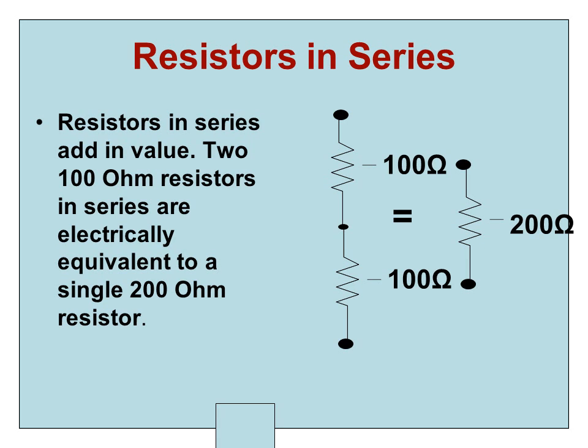Resistors in series add in value. Two 100 ohm resistors in series are electrically equivalent at the two end nodes to a single 200 ohm resistor.